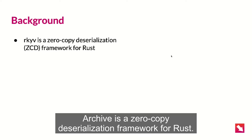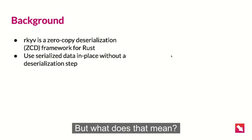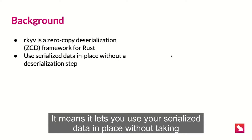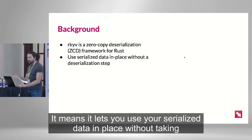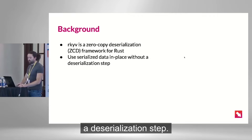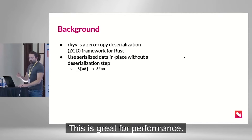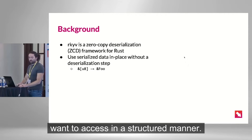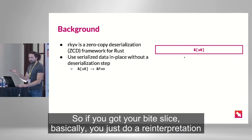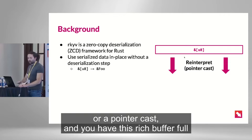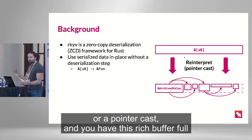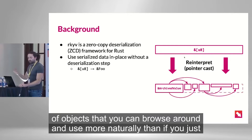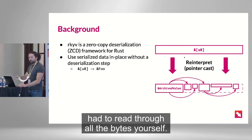Archive is a zero-copy deserialization framework for Rust. But what does that mean? It means it lets you use your serialized data in place without taking a deserialization step. This is great for performance. It effectively lets you cast a slice of bytes into some type that you want to access in a structured manner. So if you have your byte slice, you just do a reinterpretation or a pointer cast, and you have this rich buffer full of objects that you can browse around and use more naturally.